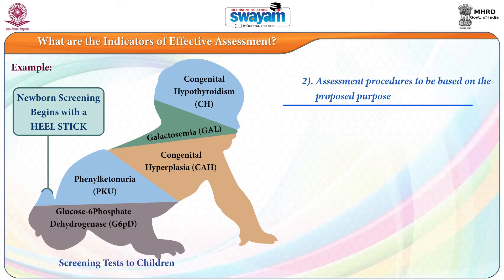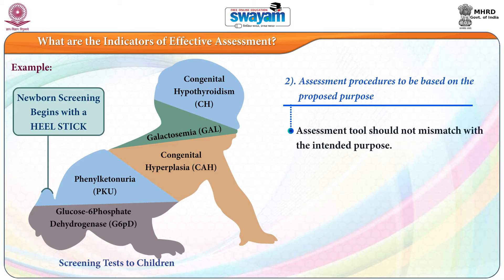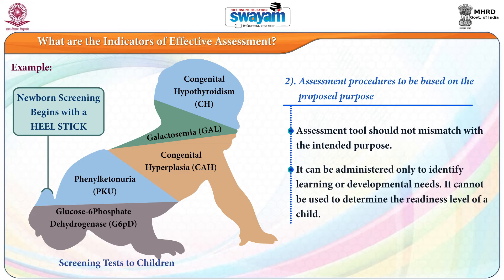The second indicator is that assessment procedures should be based on the proposed purpose. The assessment tool should not mismatch with the intended purpose. For example, screening tests can be administered only to identify learning or developmental needs — they cannot be used to determine the readiness level of a child.